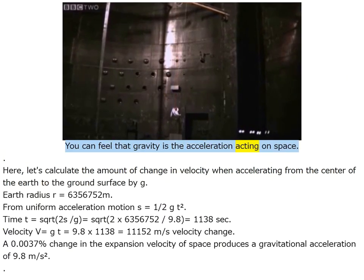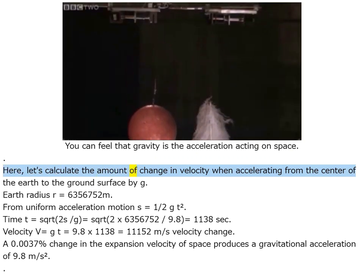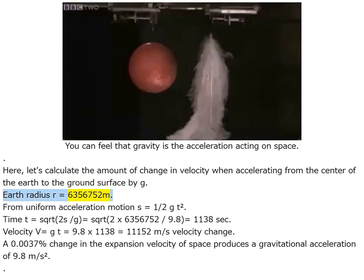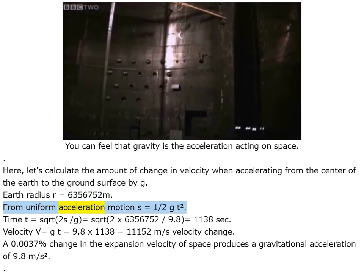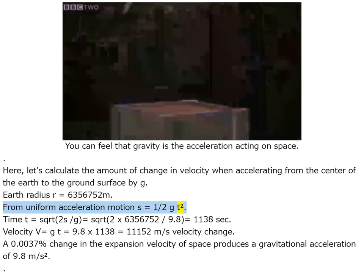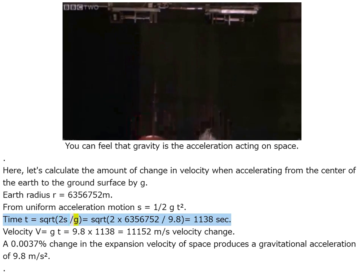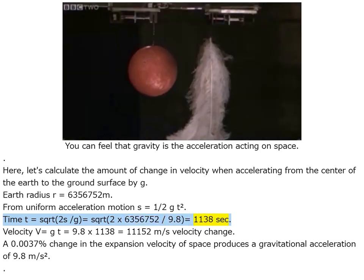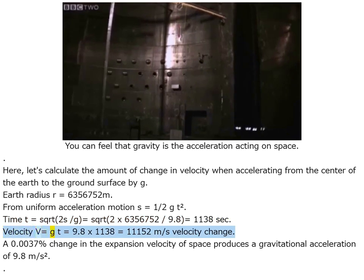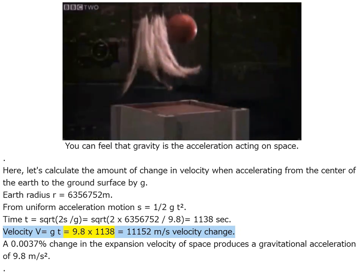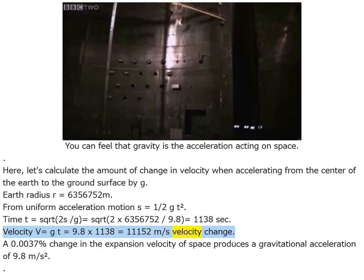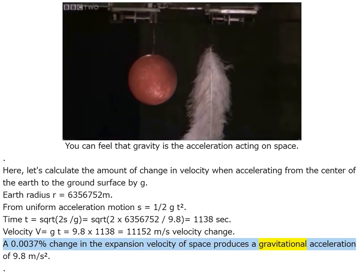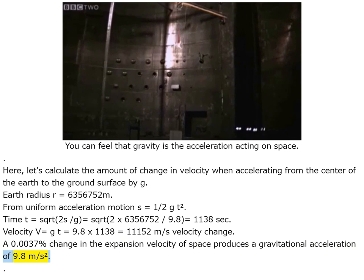Calculating the amount of velocity change when accelerating from the center of the earth to the ground surface by g: Earth radius r = 6,356,752 m. From uniform acceleration motion s = ½gt², time t = √(2r/g) = √(2 × 6,356,752 / 9.8) = 11,138 seconds. Velocity v = gt = 9.8 × 11,138 = 11,152 m/s. A velocity change of 0.0037% in the expansion velocity of space produces a gravitational acceleration of 9.8 m/s².